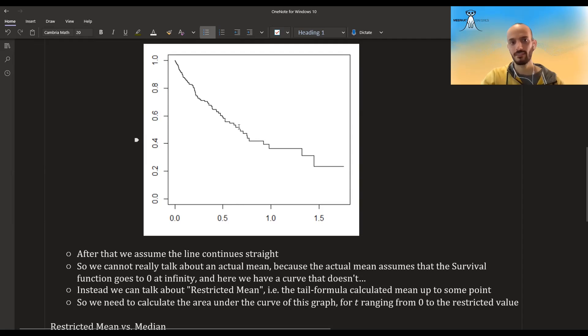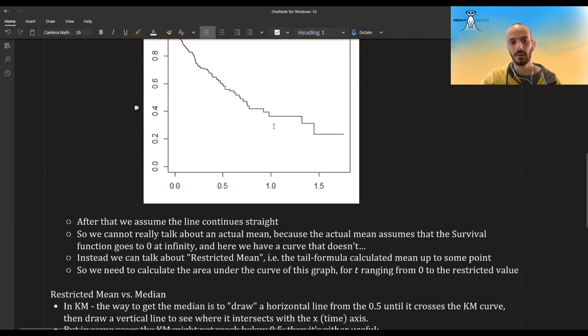So 50% of the subjects survived up to this time, and so this is the median time. Of course, there could be situations where the Kaplan-Meier curve doesn't go below 0.5, and then you cannot calculate a non-parametric median.